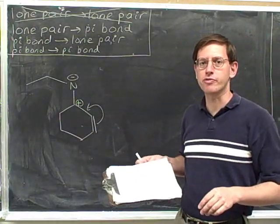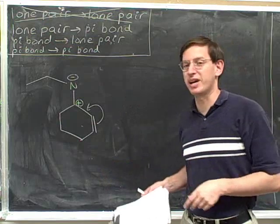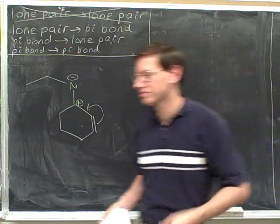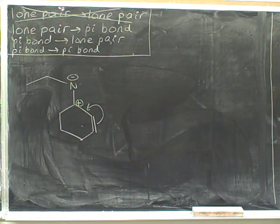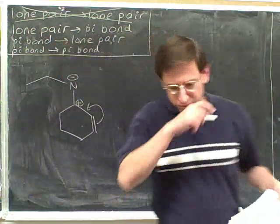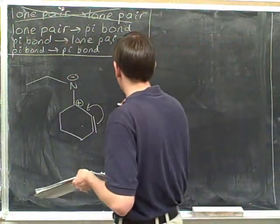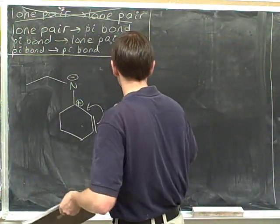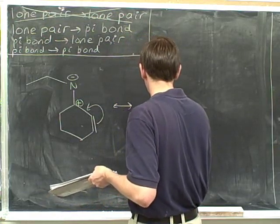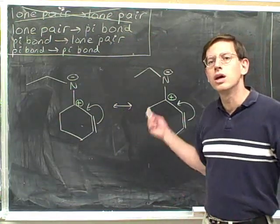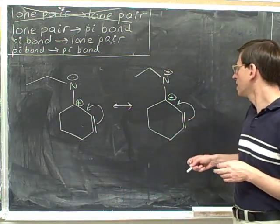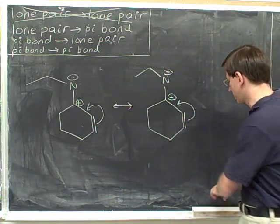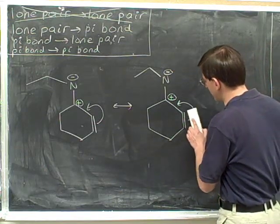Pause the video and try to draw the resonance structure that is suggested by this electron-pushing arrow. We always start by redrawing our original picture. We always ask: where are the electrons coming from? The tail of this arrow is on the pi bond, so the electrons are coming from the pi bond, and we erase the pi bond.